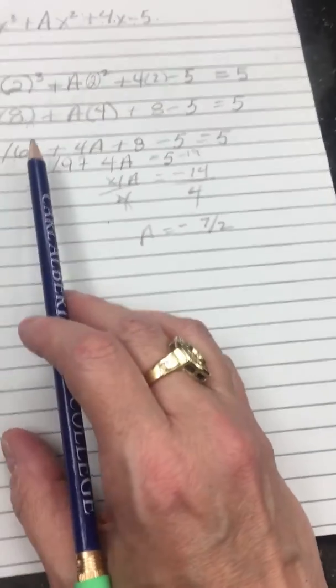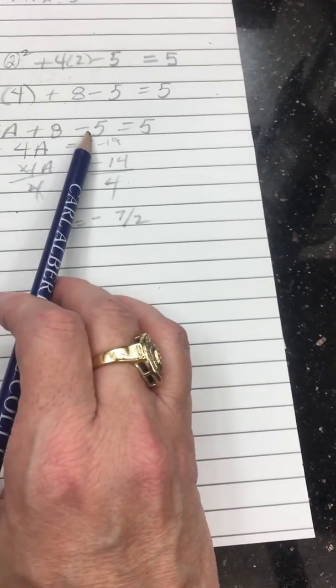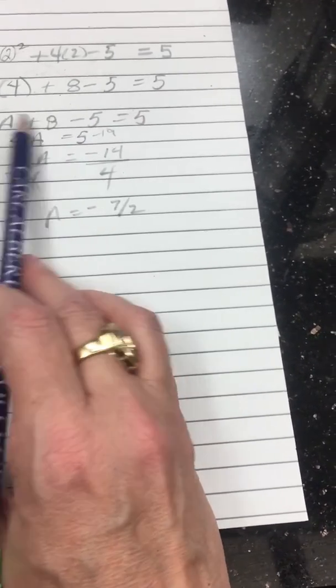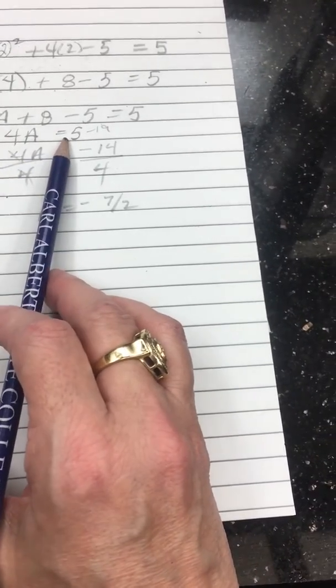Then combine your like terms. 2 times 8 is 16 plus 4A plus 8 minus 5 equals 5. So 16 plus 8 minus 5 is 19 plus 4A is equal to 5.